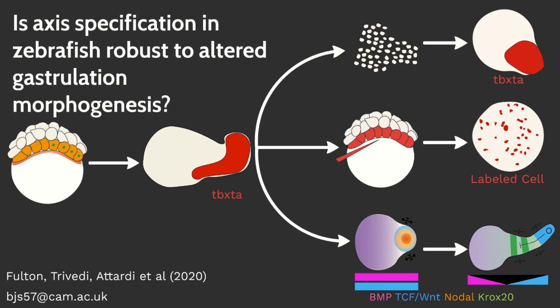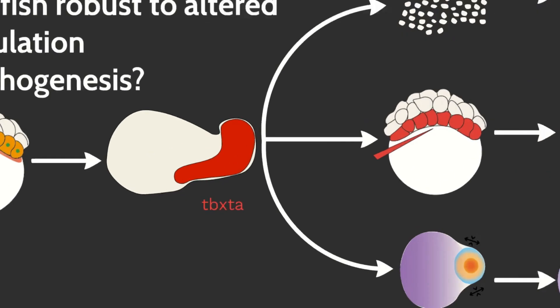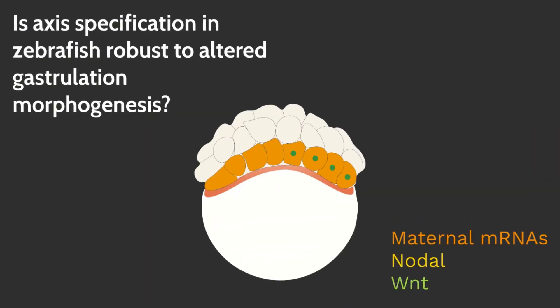Is axis specification in zebrafish robust to altered gastrulation morphogenesis? During early development, the main cell types of the embryonic body plan are specified as the morphogenetic movements of gastrulation establish the primary germ layers and begin to shape the embryo. Precisely how pattern formation can occur in the context of these extensive cell rearrangements is unknown.